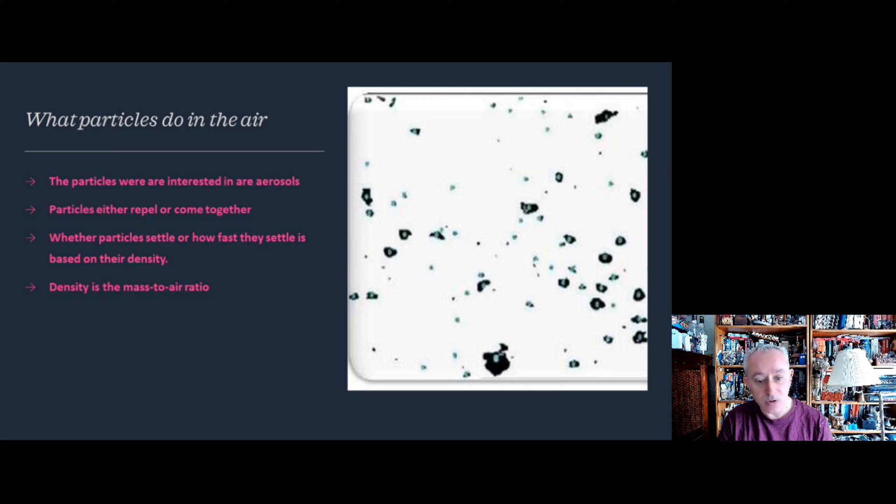Whether particles settle depends on their density, which also affects how fast they settle. In physics, density is the mass to air ratio. The larger the density, the larger the mass, and the faster particles settle onto a surface. Five micron particles settle faster than 0.5 micron particles.